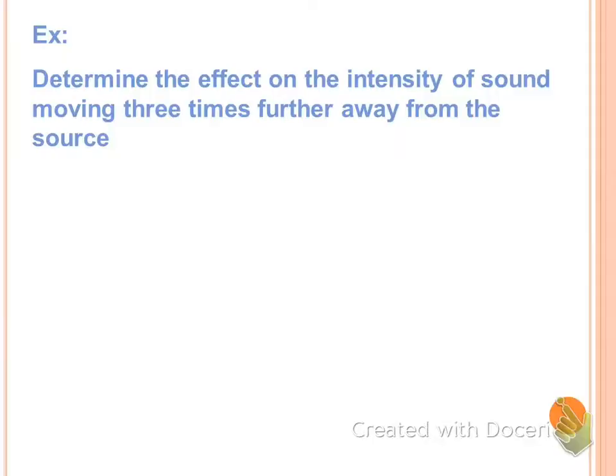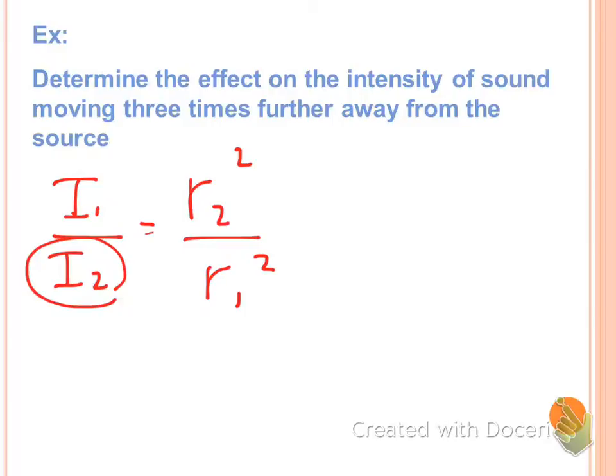Intensity of the sound. So let's look at our equation here that says I1 over I2 equals R2 squared over R1 squared. So all we're going to do here is we want to determine the intensity at the second point. So we're solving here for I2. And we want to find out the radius that's three times farther away from the original source. So what should we plug in for R2? A three.